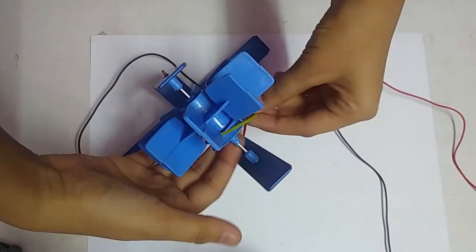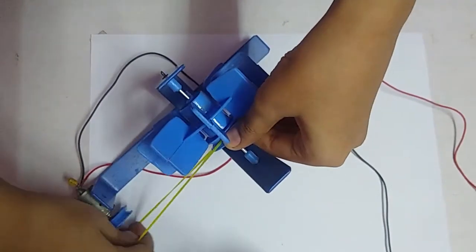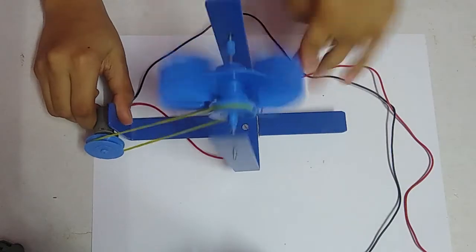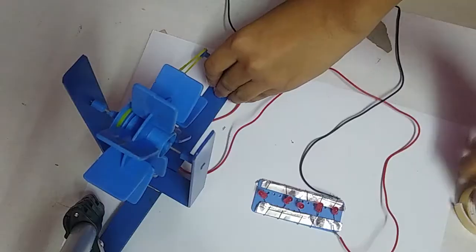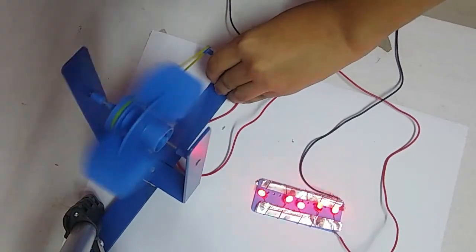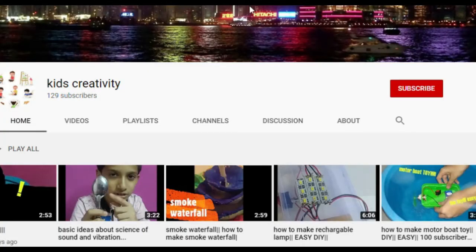Now attach the rubber bands to the axle. The turbine shows mode opposite direction of the motor. You can see the light is moving. Subscribe to my channel KidsCreativity and hit the bell icon to never miss an update.